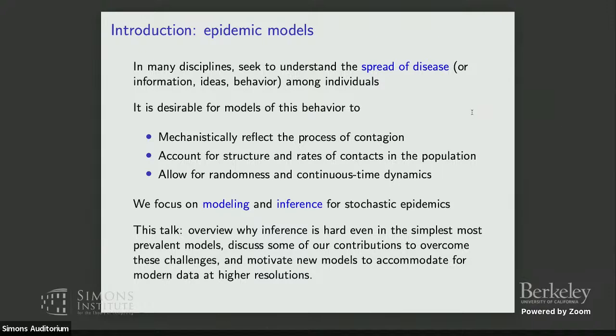I want to talk about inference. We've seen many great talks about mathematical results for deterministic or stochastic versions — they often relate to what I'll call the forward behavior of the process: thresholds, final sizes, limiting theorems. But statisticians are concerned with the inverse problem. Not what kind of data does a model generate, but given observational data, how do we go backwards and identify the most likely parameters, hopefully with corresponding uncertainty estimates.